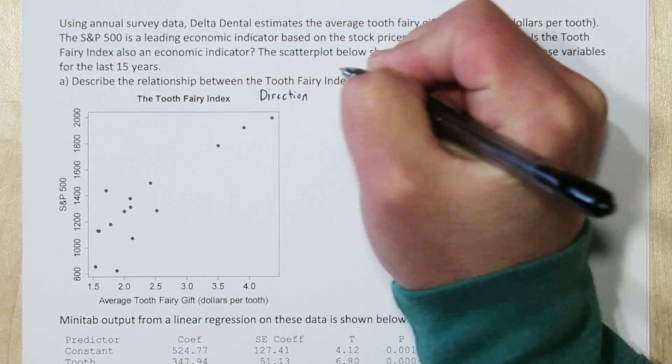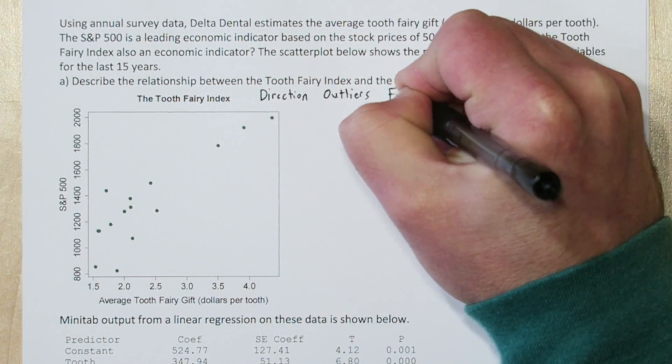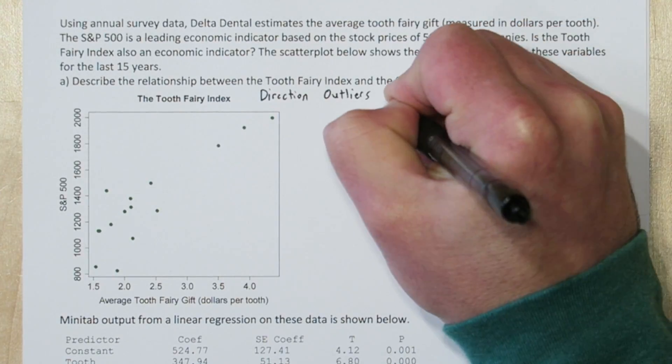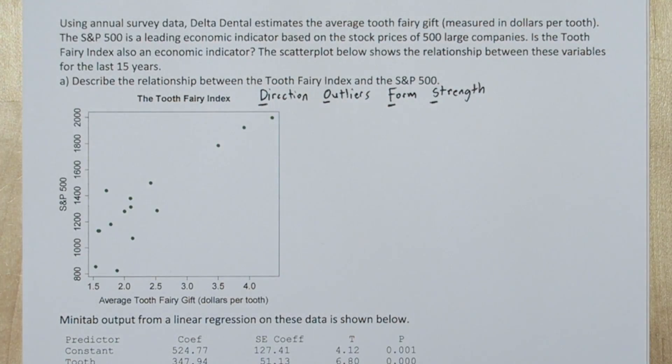When describing a scatterplot, there's four things you have to talk about: direction, outliers, form, and strength. You can use the acronym DOOFS to help you remember.